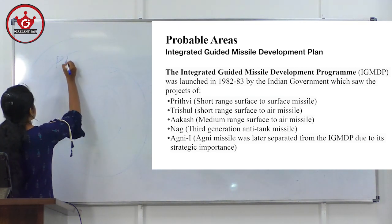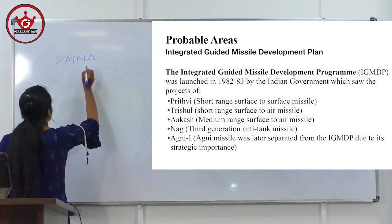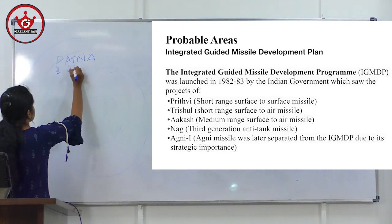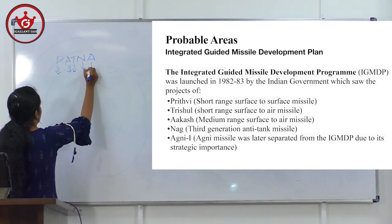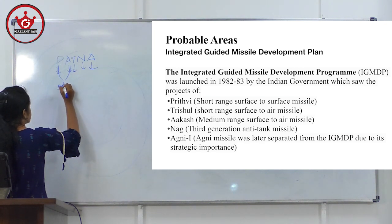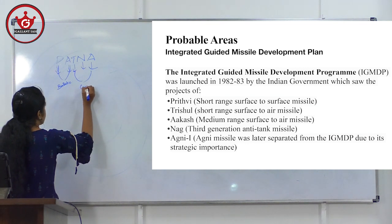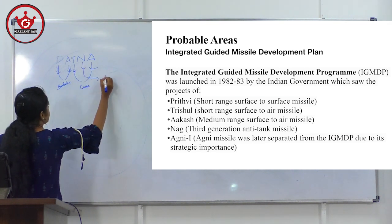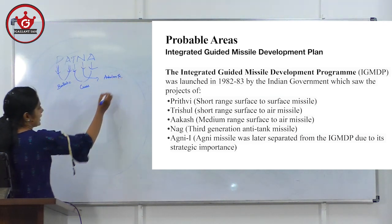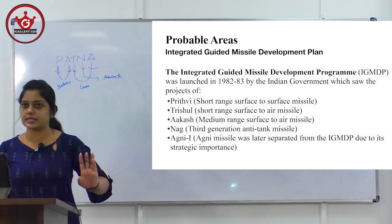Five missiles — the code is PATNA: Prithvi, Agni, Trishul, Nag, Akash. Of these, Prithvi and Agni are ballistic missiles. Trishul and Nag are cruise missiles, and Nag is also an anti-tank missile. Prithvi missile details have been given. I will explain ballistic missiles and cruise missiles.